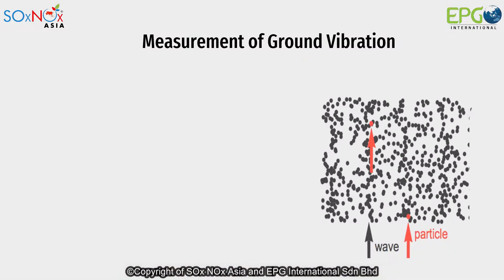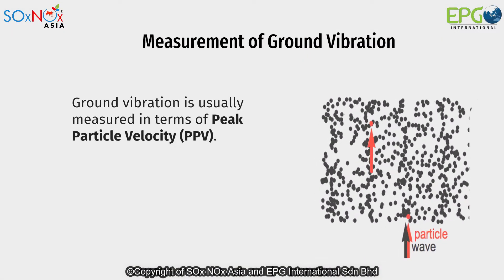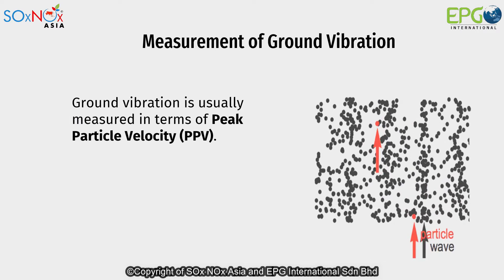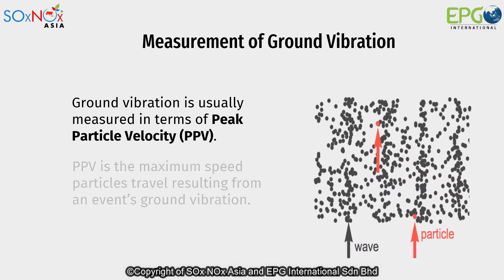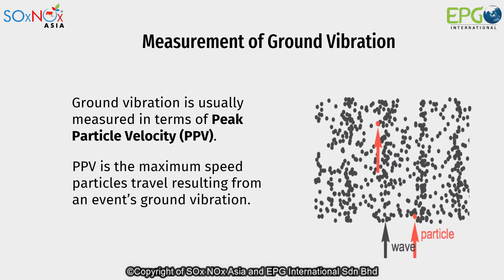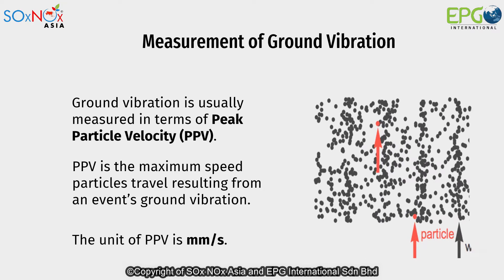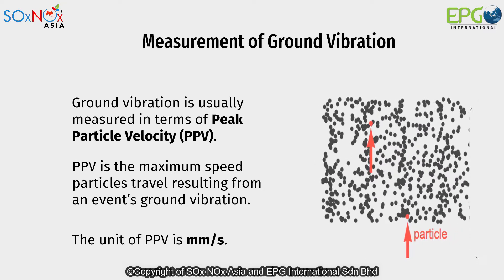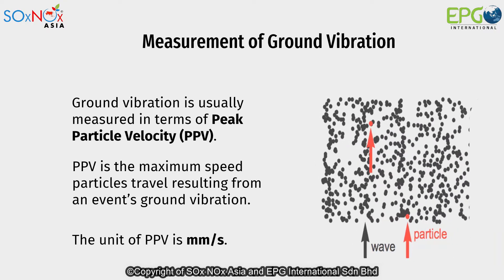Hence, the measurement of ground vibration is usually in terms of peak particle velocity, or PPV. PPV is known as the maximum speed particles travel resulting from an event's ground vibration, and the unit of PPV is millimeter per second.